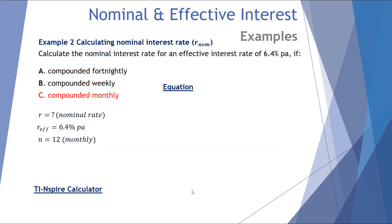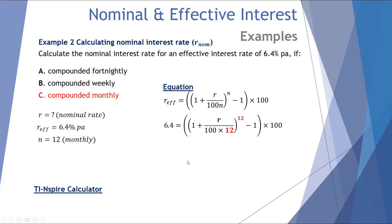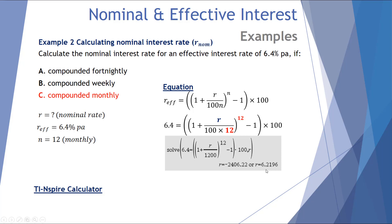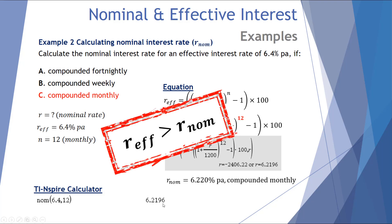Finally, compounding monthly. The effective interest rate is 6.4%, R is the unknown nominal rate, and N = 12 compounding periods per year. Using the solve function on the TI-Inspire calculator gives 6.2196% compounded monthly. Using the nominal rate formula on the TI-Inspire also returns 6.2196%, rounded to four decimal places. Final check: the effective interest rate is greater than the nominal interest rate.